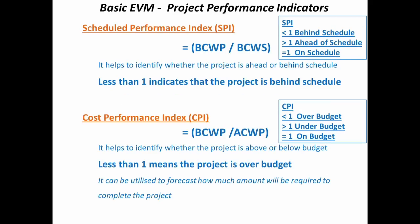Another way to look at performance is SPI — schedule performance index — and CPI — cost performance index. These are ratios. For the earthwork example we got values of 0.4. If SPI is less than 1 it is behind schedule, greater than 1 ahead of schedule, and equal to 1 on schedule. Management will ask for SPI and CPI to judge where the project is at the monitoring phase. CPI has a similar ratio and similar range.